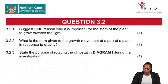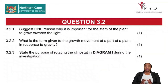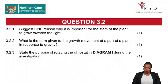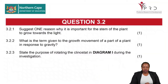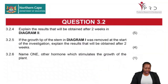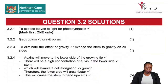Question 3.2.1 asks why it is important for the stem of the plant to grow towards light. As the plant grows towards light, the leaves receive light and photosynthesis can take place. It is important so that the plant can receive sunlight for the process of photosynthesis.